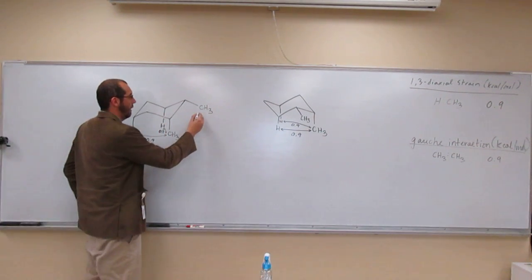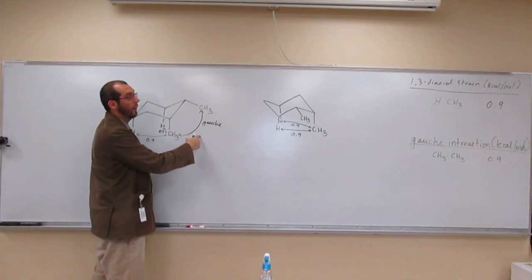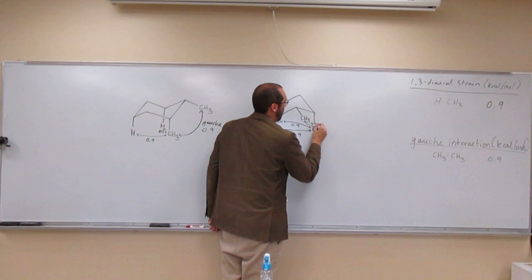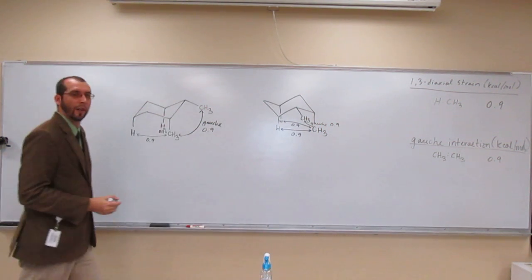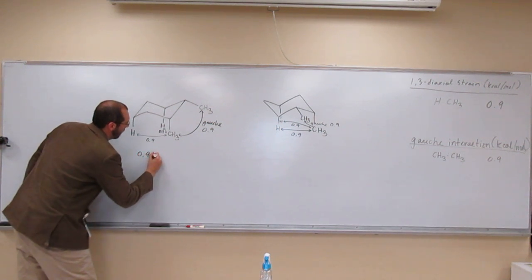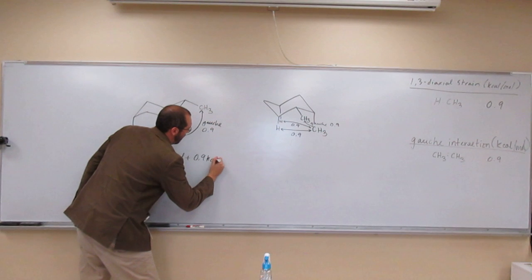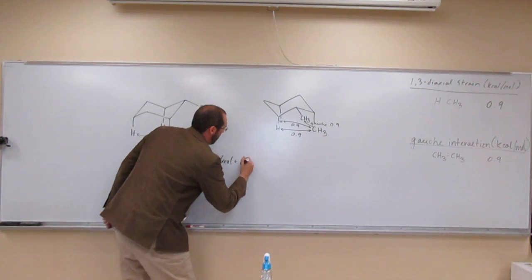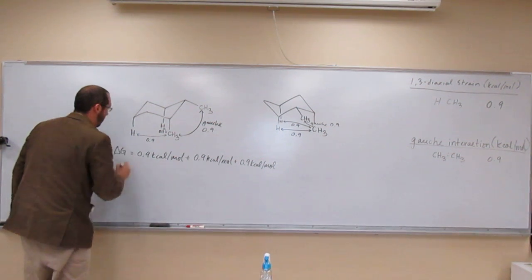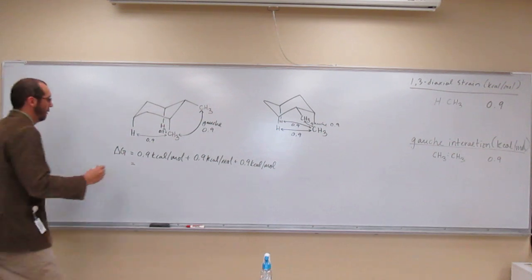So, we have one here, and that's how many kcals? 0.9. And then we also have one here. Okay, so what's the total energy in kcals of this one? So how do I do it? Very good, you add them all up. So 0.9 plus 0.9 is 1.8, plus 0.9 is 2.7.